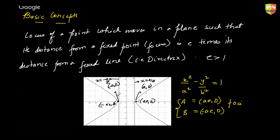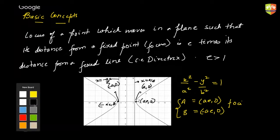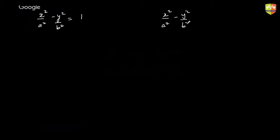Now, what you saw was a hyperbola opening left and right. You could also have a hyperbola where the equation has a minus sign on the other term — this is called the conjugate hyperbola.